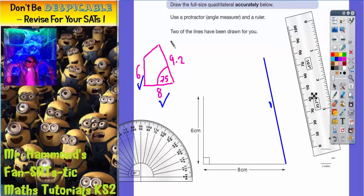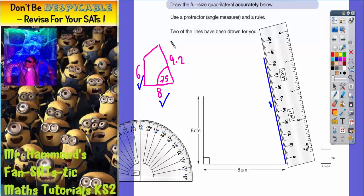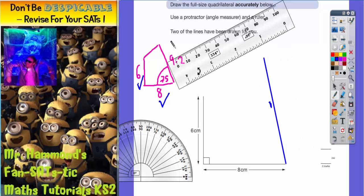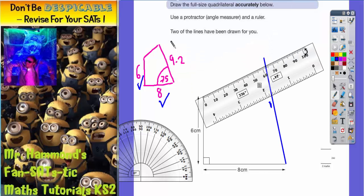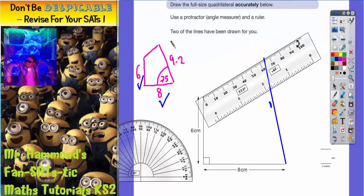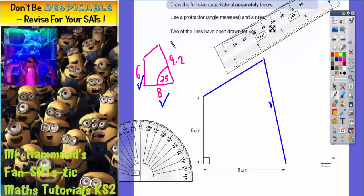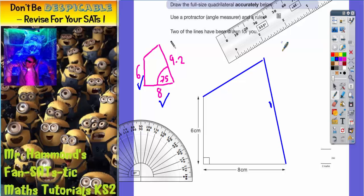All we need to do now is rotate the ruler around and join it up. As I said earlier, we're going to get this side for free because we have no information about it. Since we've left it till last, I'll just join it up—and there we have it, we're done.